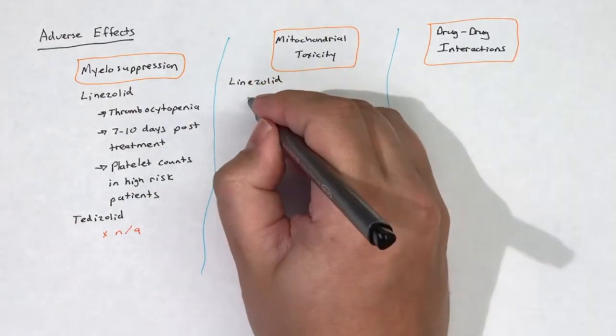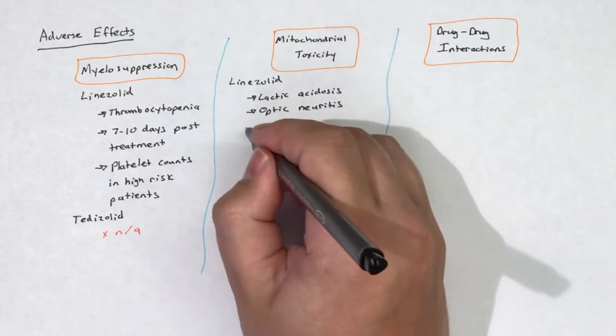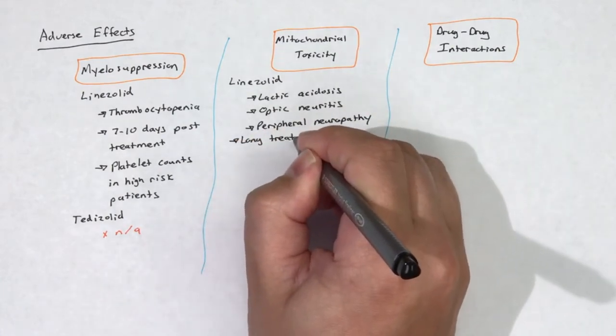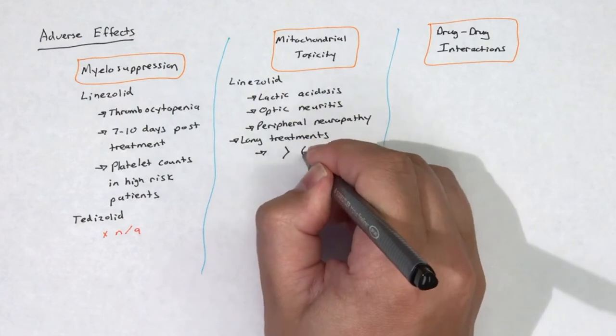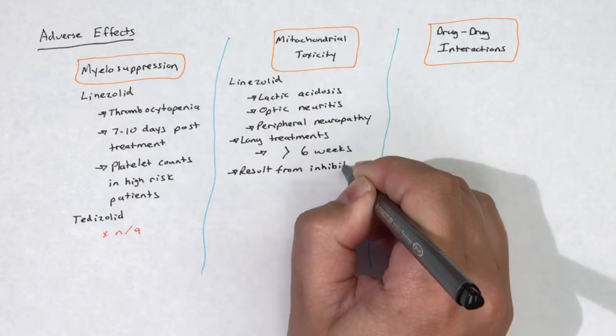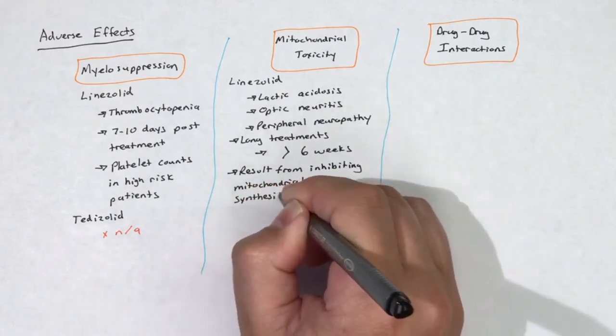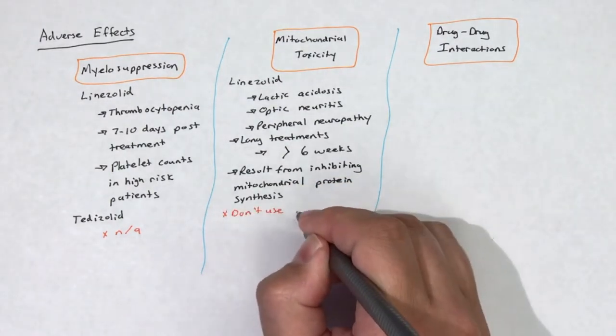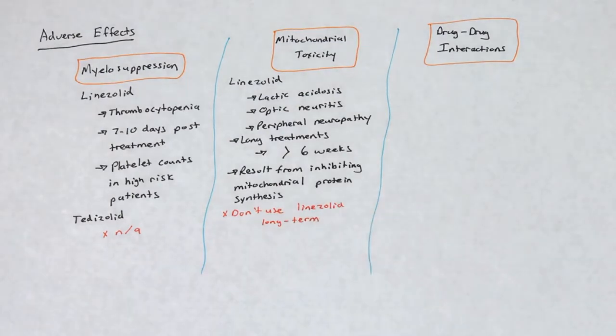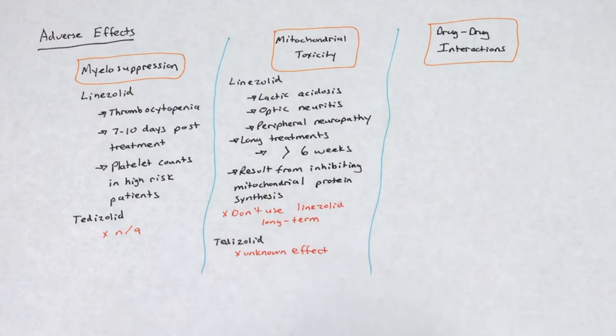According to a 2007 study in Pharmacotherapy by Narita et al., lactic acidosis, optic neuritis, and peripheral neuropathy can develop in patients receiving linezolid. These toxicities appear after long treatments with linezolid greater than six weeks, and these toxicities are believed to be the result of an inhibition of mitochondrial protein synthesis. Due to this toxicity, linezolid should generally not be used for long-term treatment if there is an alternative agent available. It is unknown how tedizolid affects mitochondrial protein synthesis.